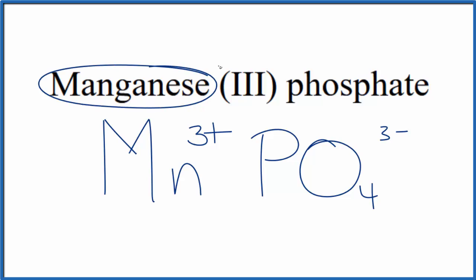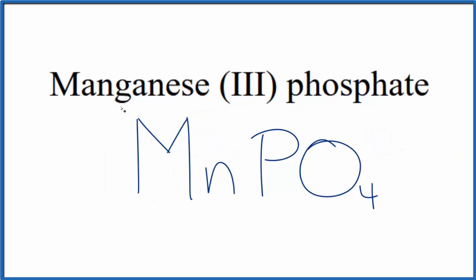Since manganese is a transition metal and this phosphate is a polyatomic ion, a group of nonmetals, these charges here, this 3+ and 3-, they need to balance, give us a net charge of 0. So 3+, 3- gives us a net charge of 0. So this is the formula for manganese III phosphate.